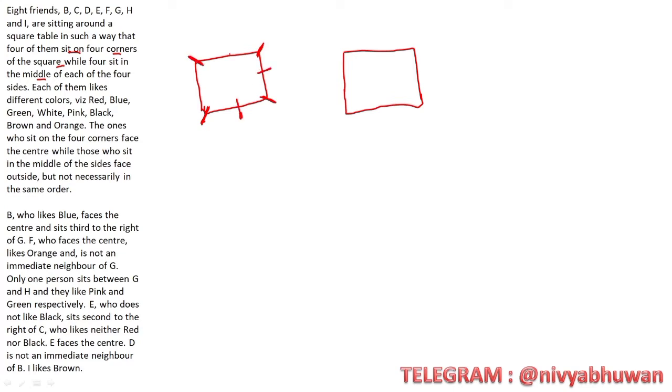Which direction are they facing? Let's see. Everyone likes different colors. The ones who sit on the four corners face the center - they are all facing inside. The ones in the middle of the sides face outside.